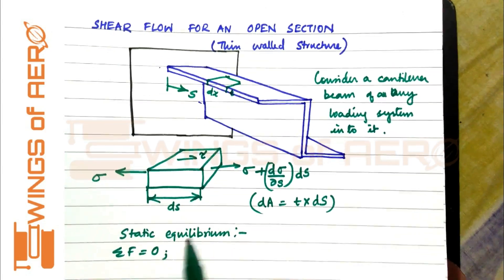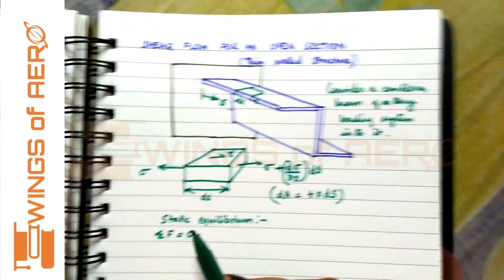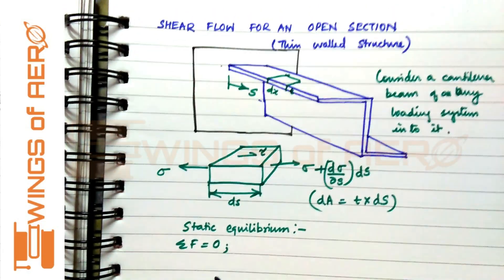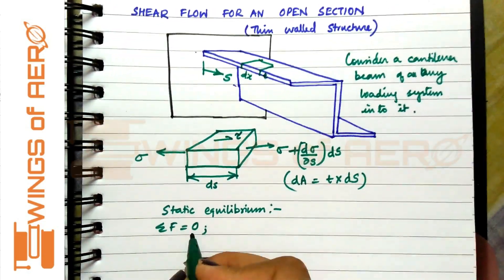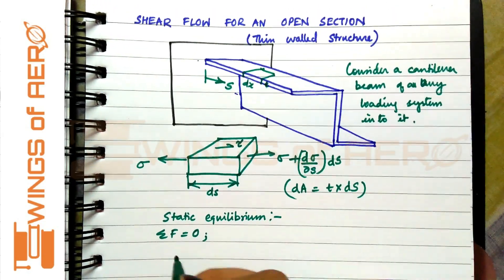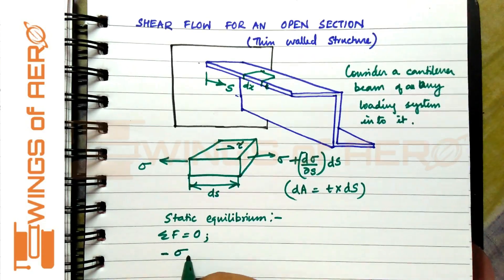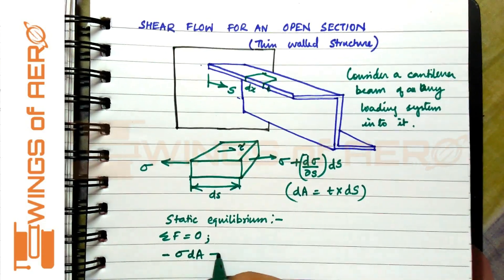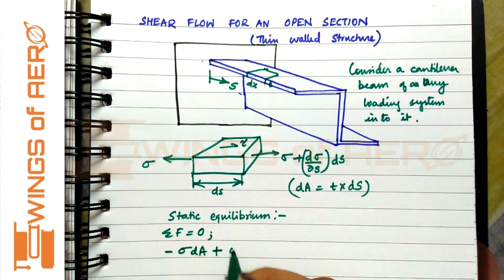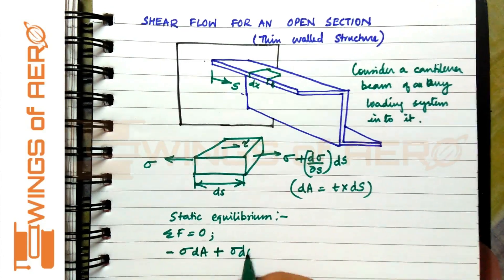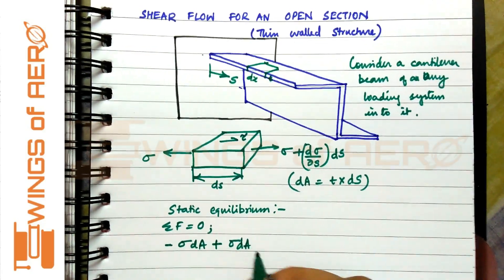We are going to find the cross-sectional surface by taking a static equilibrium equation — that is, the summation of all forces. We are going to follow the same methodology as done previously to find the summation of all forces.